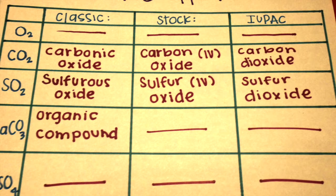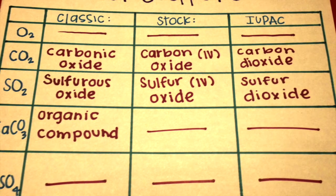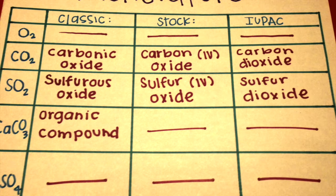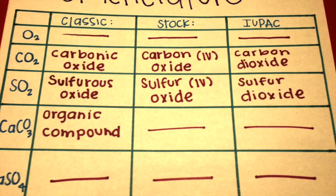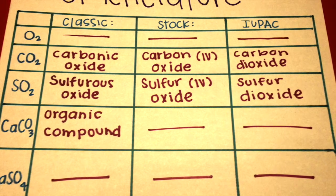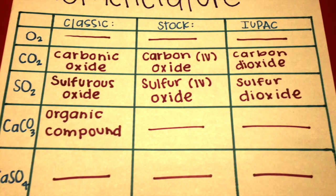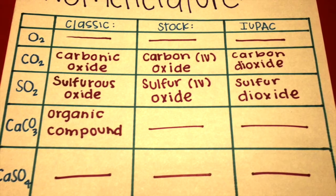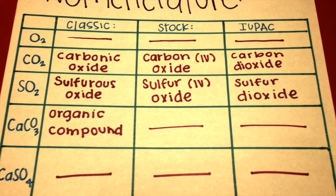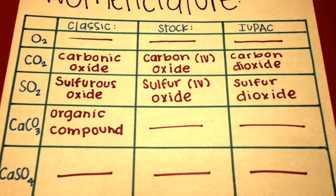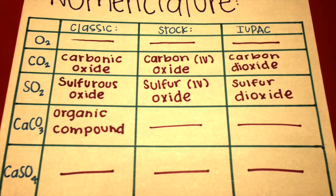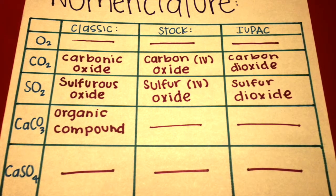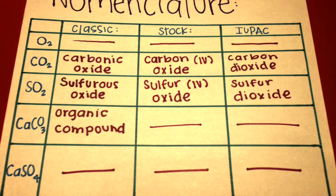This is the nomenclature for the second problem. Oxygen is an atom and therefore cannot be classified into the following systems. CO₂ in the classic system is called carbonic oxide; in the stock system, carbon-4 oxide; and in the IUPAC system, carbon dioxide. SO₂ in the classic system is called sulfurous oxide; in the stock system, sulfur-4 oxide; and in the IUPAC system, sulfur dioxide. CaCO₃ is an inorganic compound also known as calcium carbonate, and CaSO₄ is also an inorganic compound known as calcium sulfate.